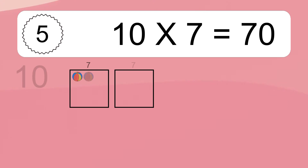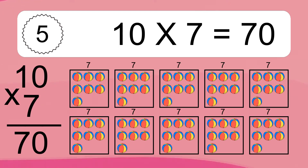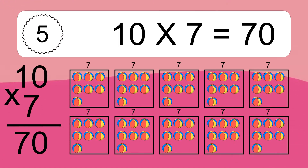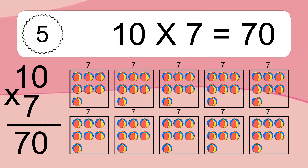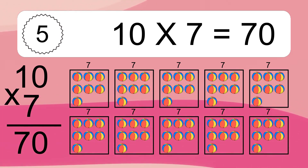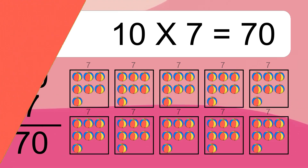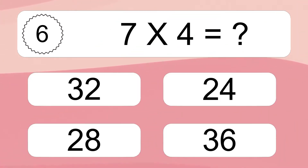10 times 7 equals what? We have 10 boxes and each box has 7 colorful balls inside. If you count all the balls in all the boxes together, you will have 10 times 7 balls. This equals 70 balls.